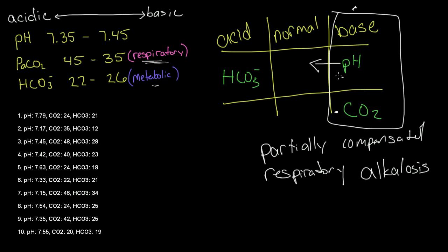Our system is primarily in an alkalotic state, but the opposite parameter is compensating that in a partial way to bring the pH closer to normal. It's not quite normal — it's still in the basic column. But without this compensation, if this CO2 was over here instead, then this pH would be even farther over here.